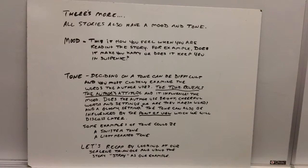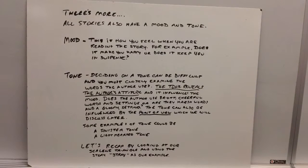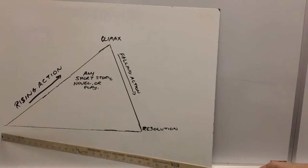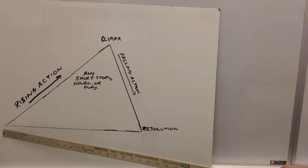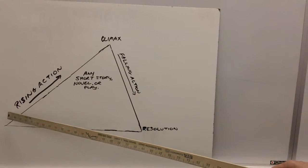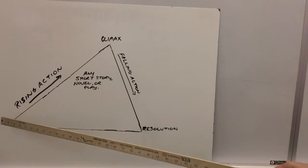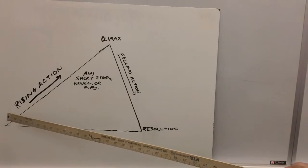Let's recap by looking at our scalene triangle once more and using the story Stray as our example and I'll point out some examples as we go along. Okay, here we are back at the beginning. Remember I told you the exposition would be down here. This is where we find out the character, the setting, the time of the action, and then there's rising action.